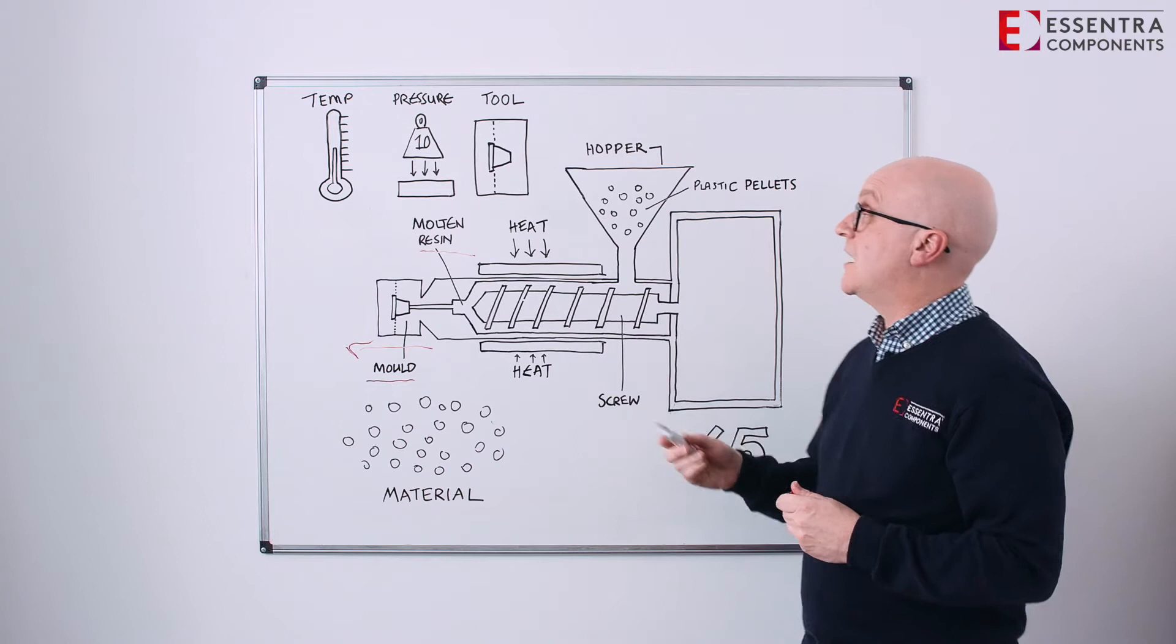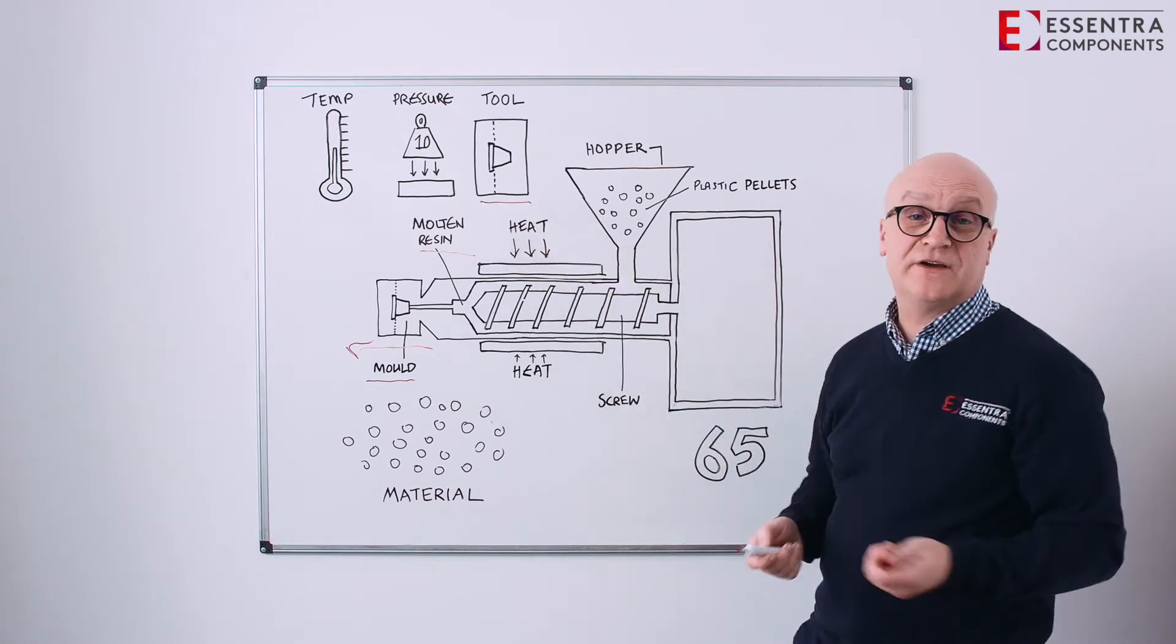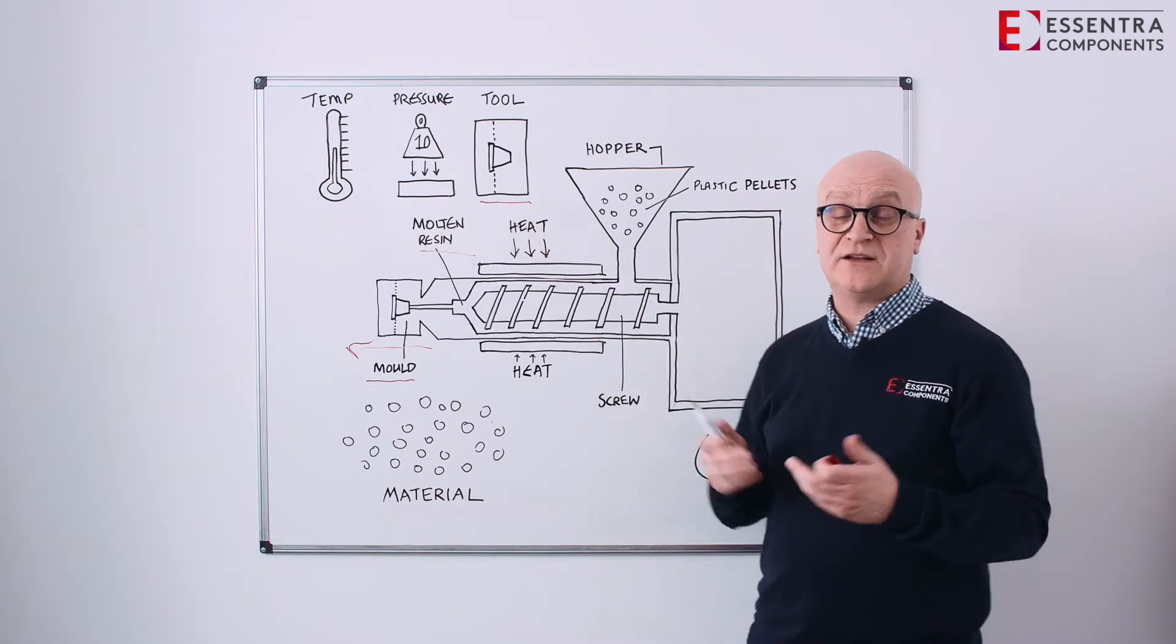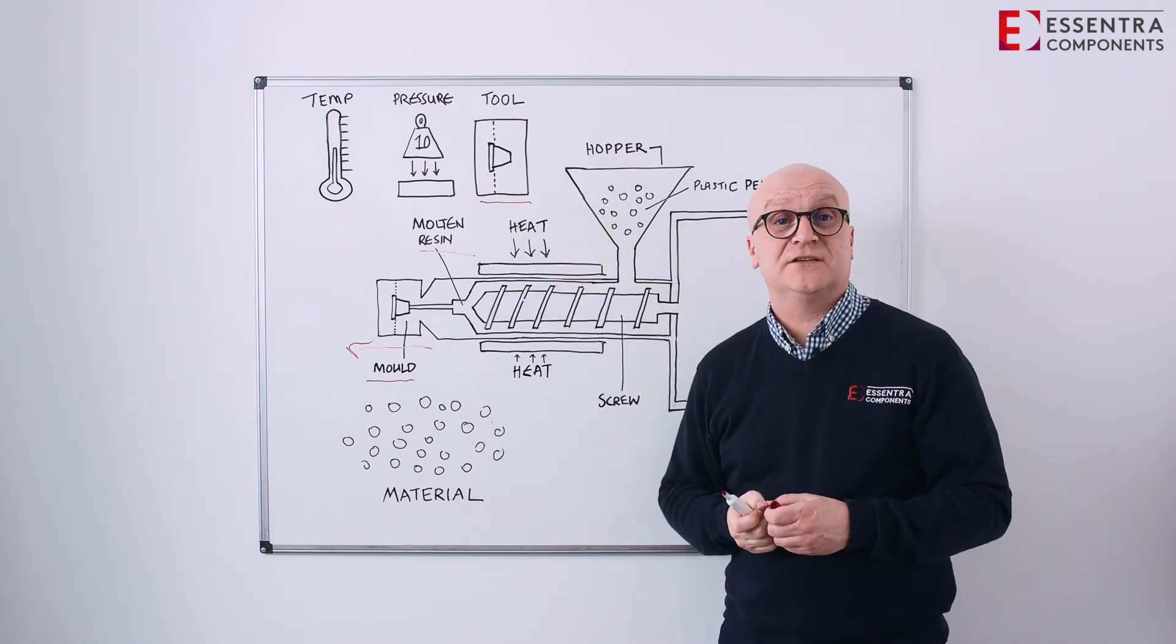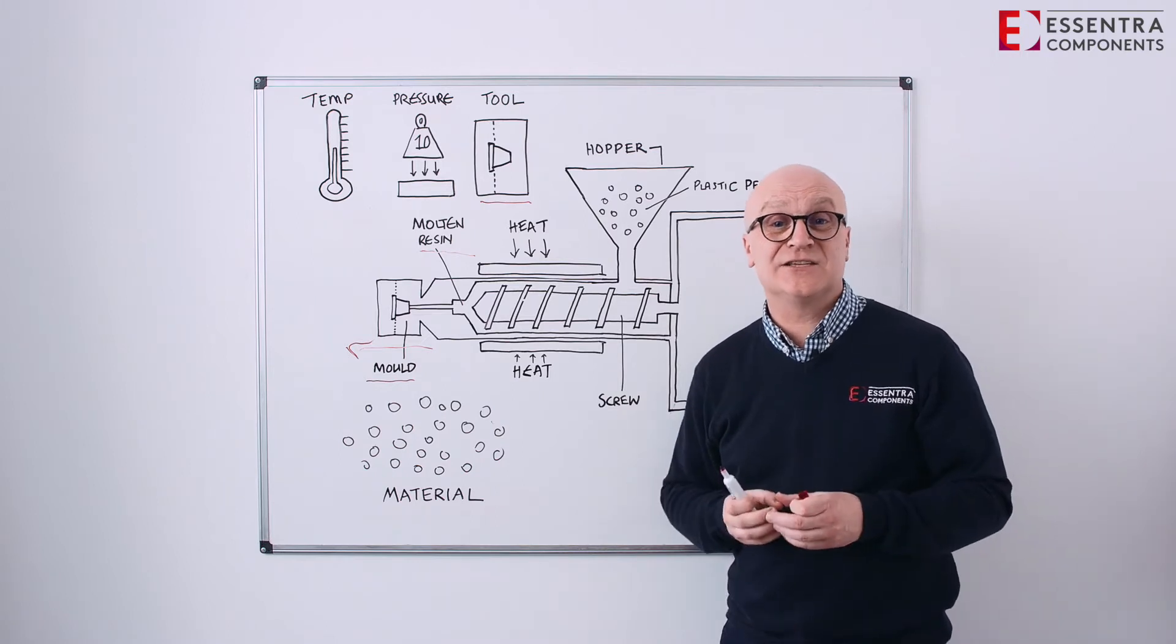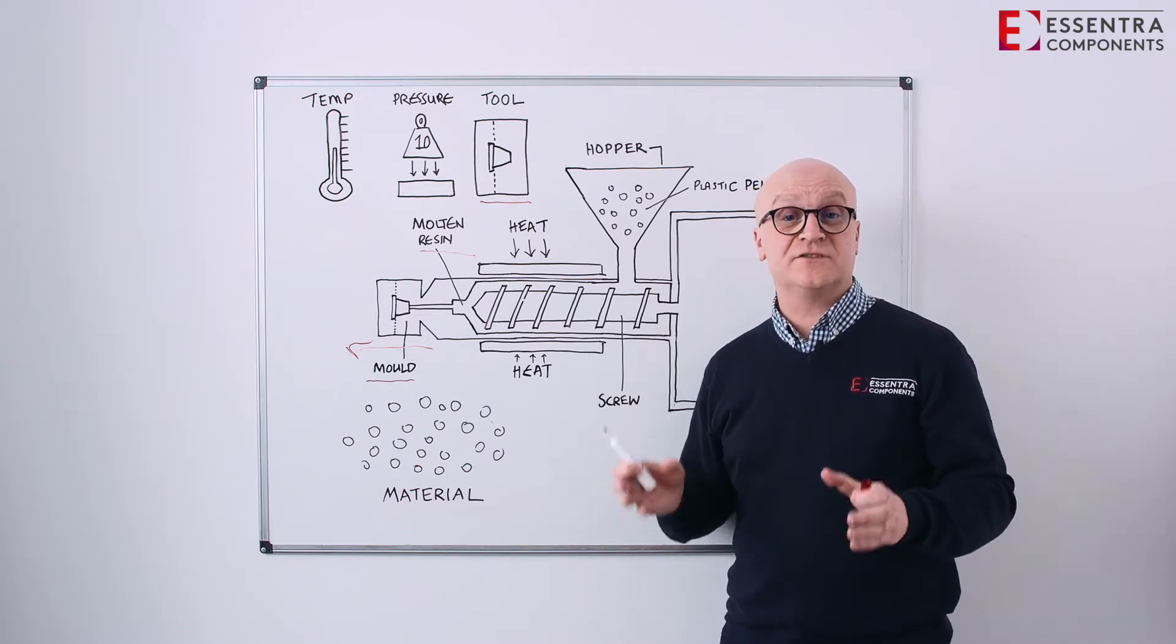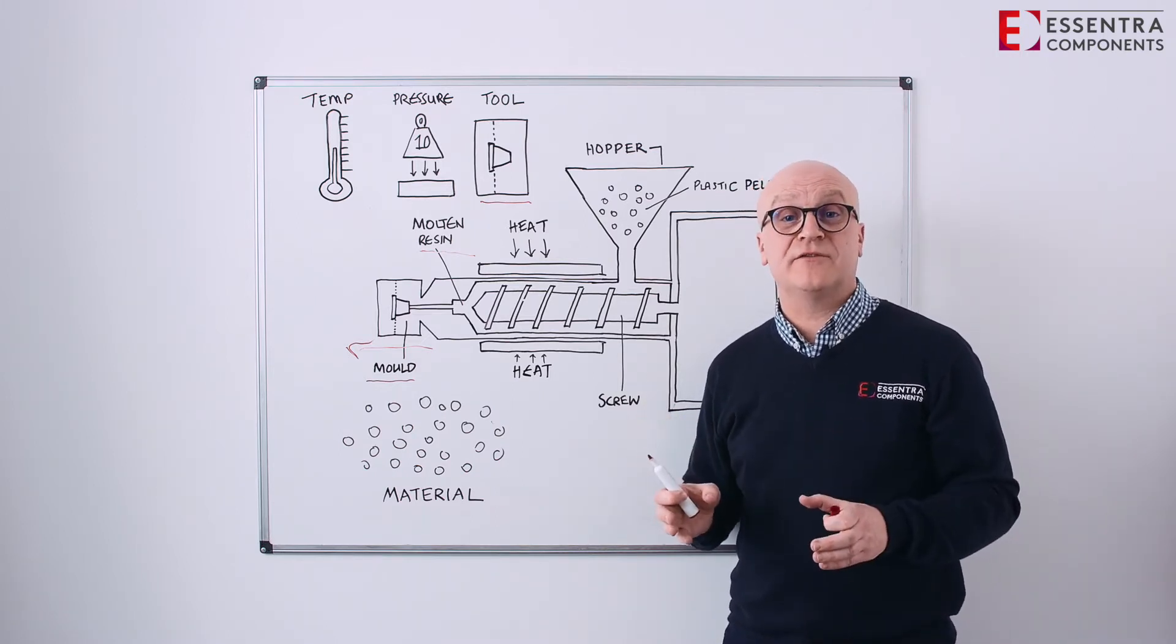So for example, our mold tool. It's very important. A mold tool is made up of two halves. Generally, you have a core and a cavity. The process has to take into account the intricacies of the tool and the design of the tool. It's very important.